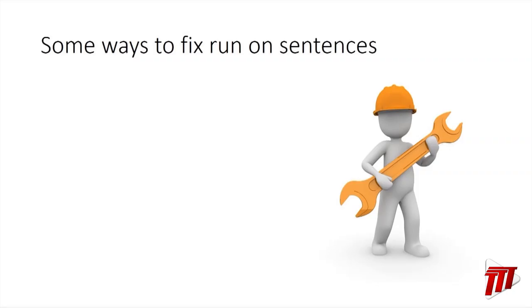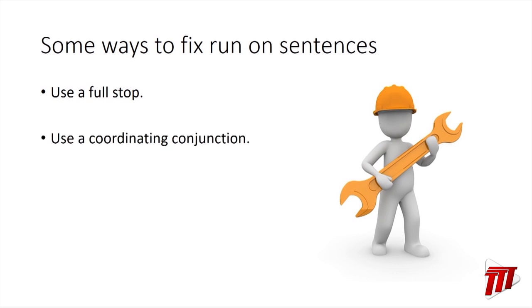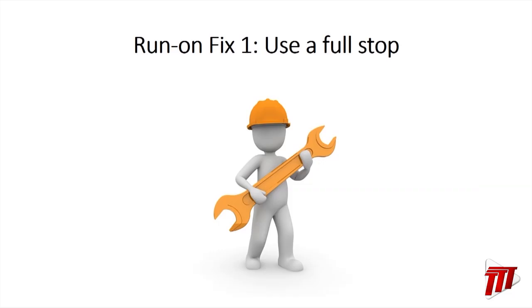So let's look at some ways we can fix run-on sentences. One way is that you can use a full stop. Another way is that you can use a coordinating conjunction. And yet another way is by using a subordinating conjunction. These words sound very big and fancy, but I'll take you through it — don't worry. The first fix, and the easiest fix, is to use a full stop.